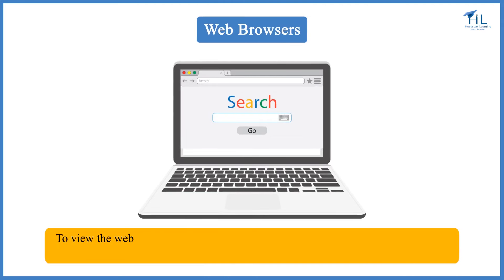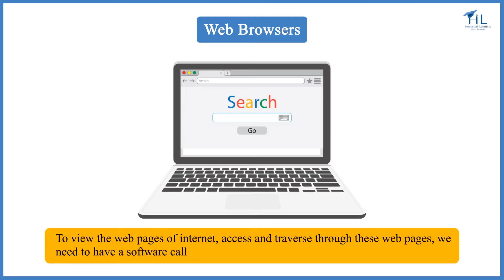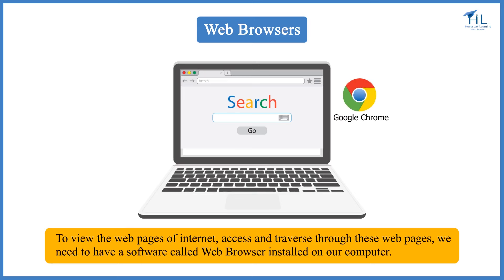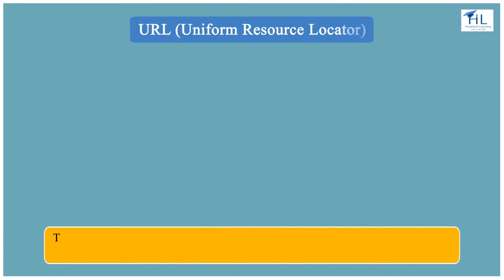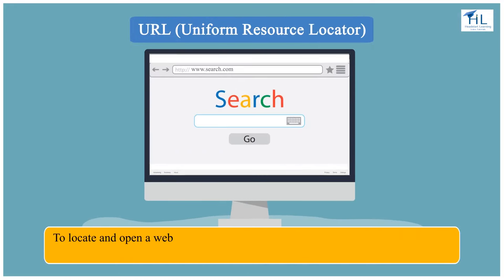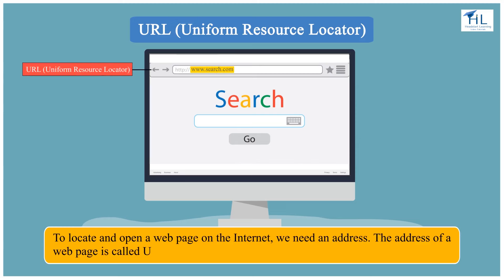To view and traverse through web pages on the internet, we need to have a software called a web browser installed on our computer. Some popular web browsers are Google Chrome, Firefox, and Internet Explorer. The address of a web page is called a URL, or Uniform Resource Locator.